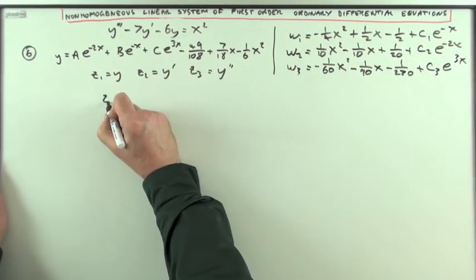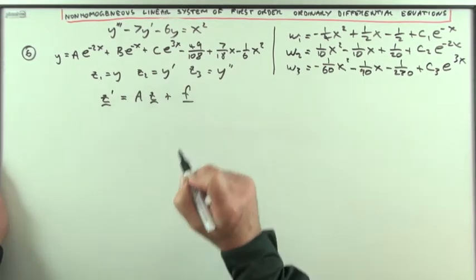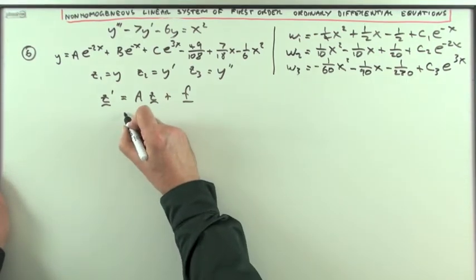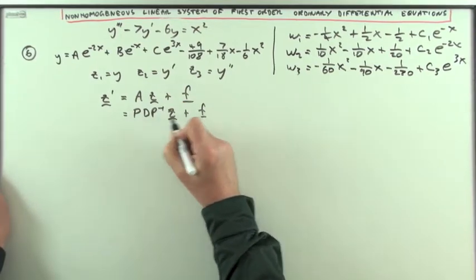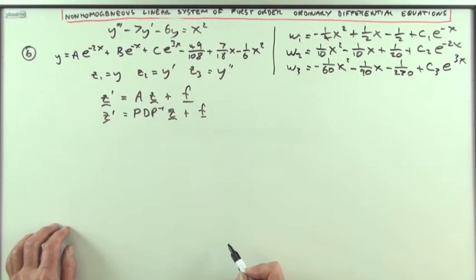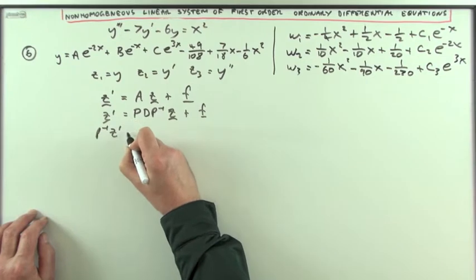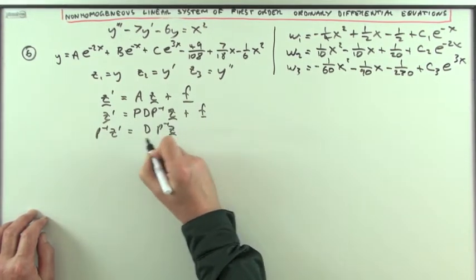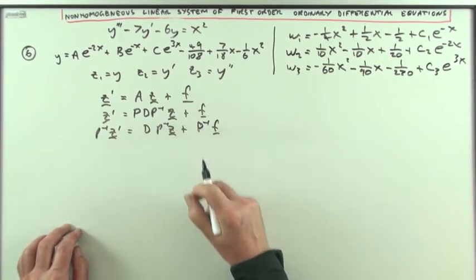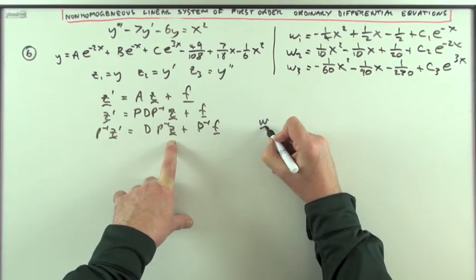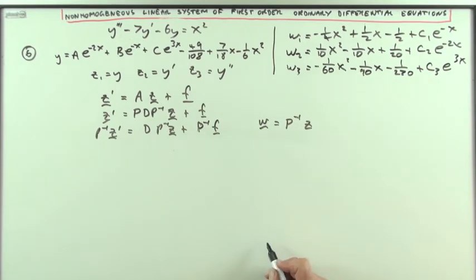Which had this form: z dashed equals Az plus f. Diagonalizing A to PDP⁻¹ times z plus f let you carry out the substitution by first of all pre-multiplying by the inverse of P, and then carrying out the substitution w equals inverse of P times z. You ended up with this set.